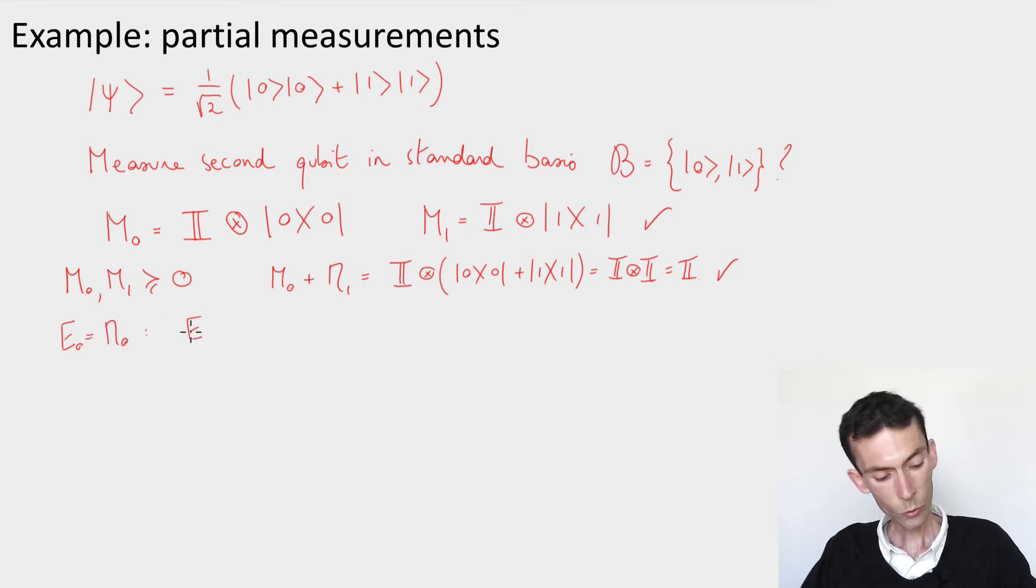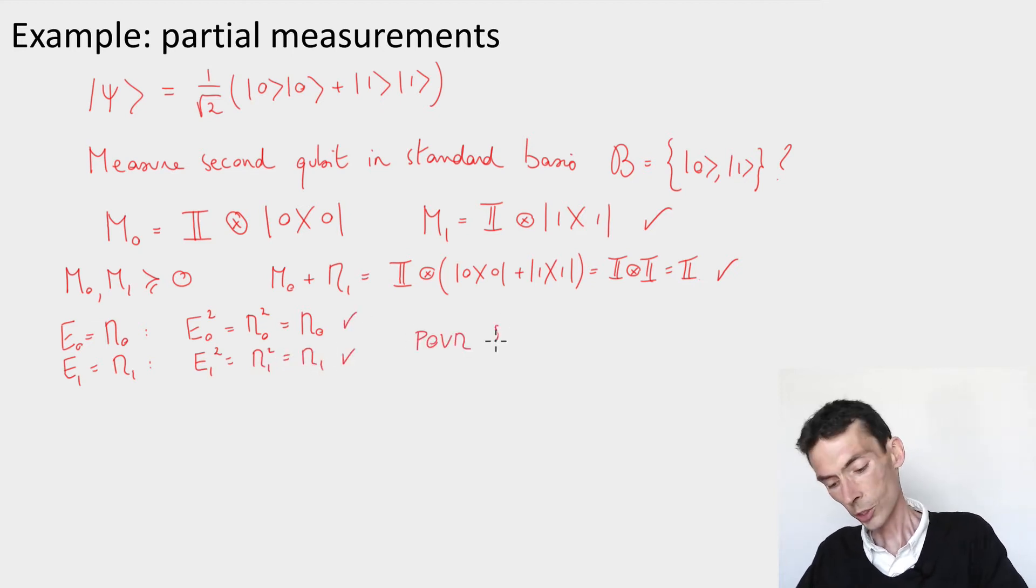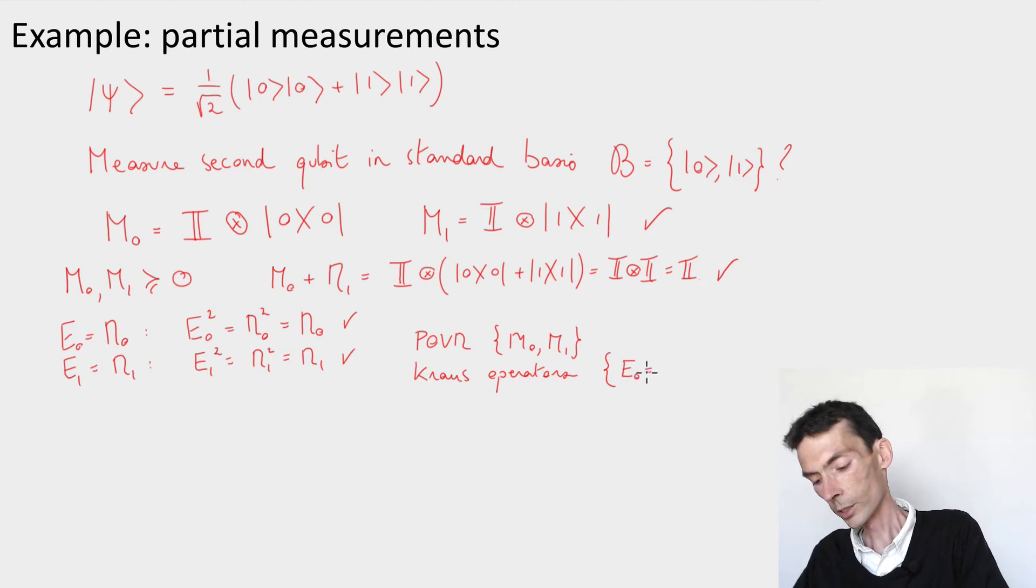The reason is that if I define E₀ to be equal to M₀, then I can check that E₀ squared is M₀ squared, and because M₀ is a projector, this is equal to M₀, and so the rule for the Kraus operator is satisfied. Same thing, I can set E₁ to be equal to M₁, and then I will have that E₁ squared is equal to M₁ squared, which is equal to M₁. So I have a POVM, which is given by M₀ and M₁, and I have Kraus operators, which again are given by M₀ and M₁. So E₀ is simply equal to M₀, and E₁ is simply equal to M₁.